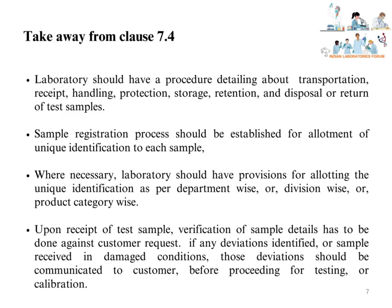Takeaway from Clause 7.4: The laboratory should have a procedure detailing transportation, receipt, handling, protection, storage, retention, and disposal or return of test samples. A sample registration process should be established for allotment of unique identification to each sample. Where necessary, the laboratory should have provisions for allotting unique identification as per department-wise, division-wise, or product category-wise.